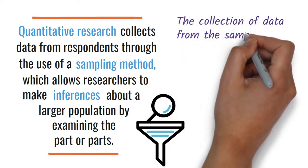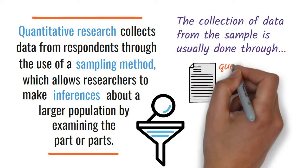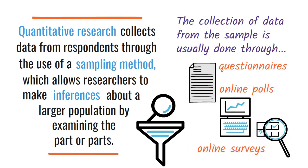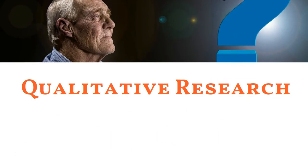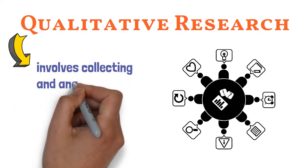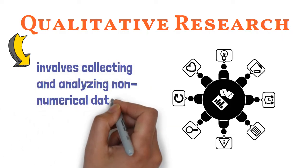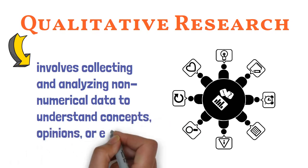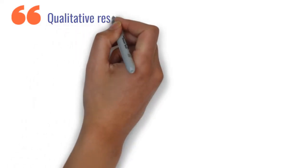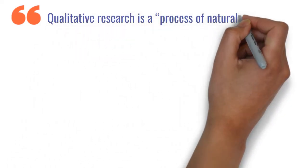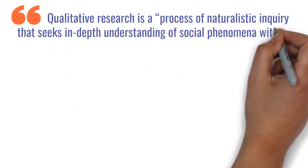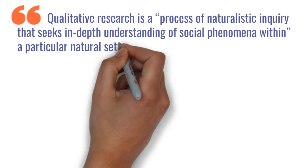The collection of data from the sample is usually done through questionnaires, online polls, and online surveys. On the other hand, qualitative research is a type of research that involves collecting and analyzing non-numerical data to understand concepts, opinions, or experiences. According to the University of Utah, qualitative research is a process of naturalistic inquiry that seeks in-depth understanding of social phenomena within a particular natural setting.